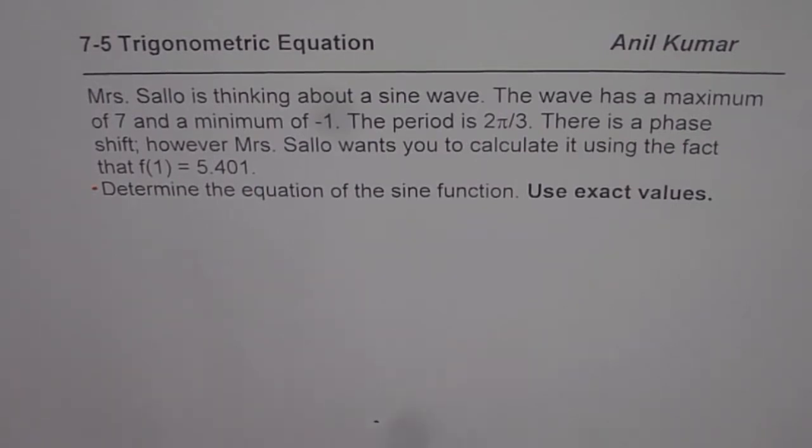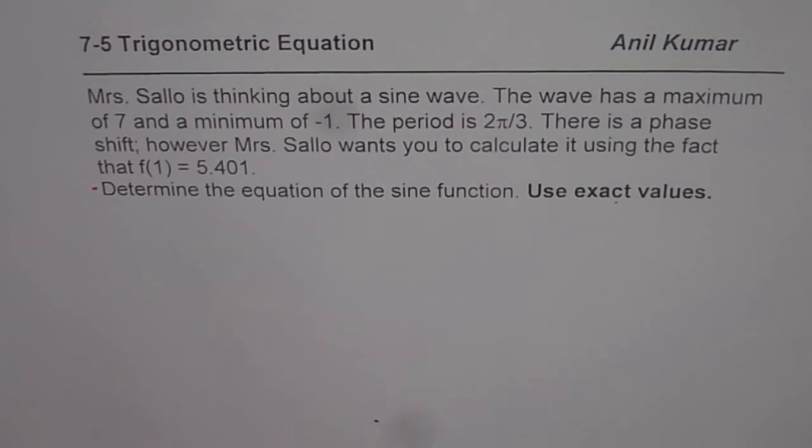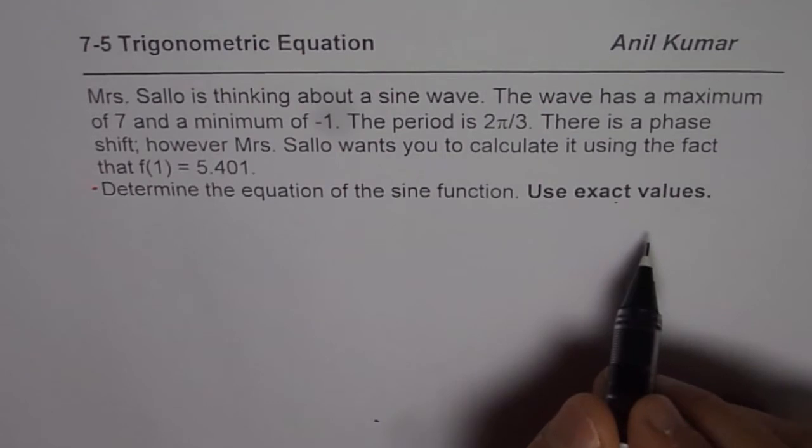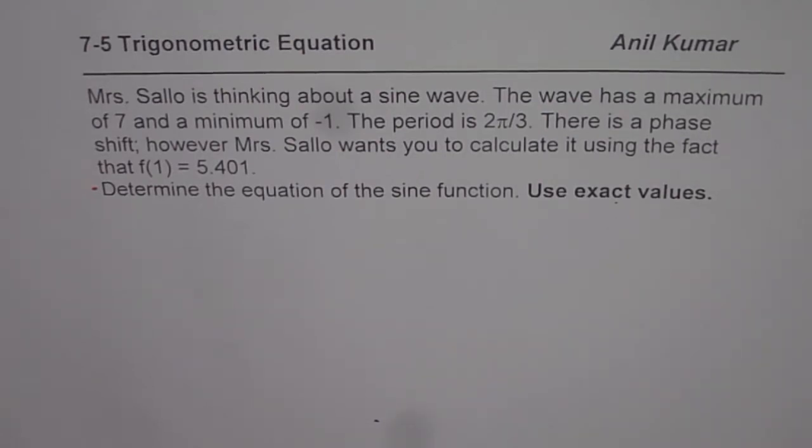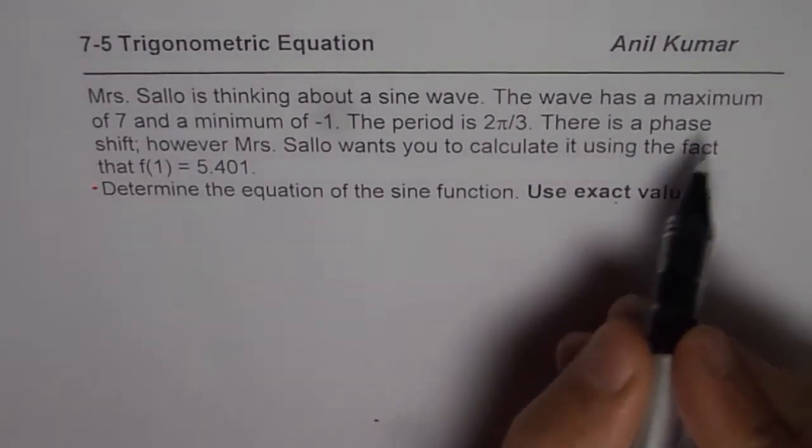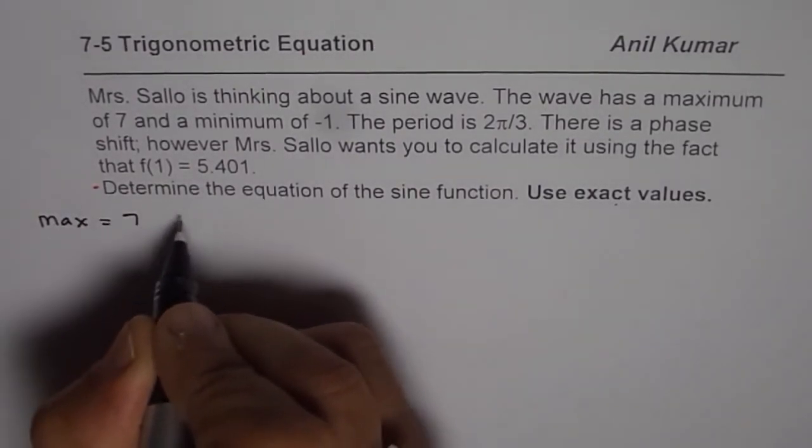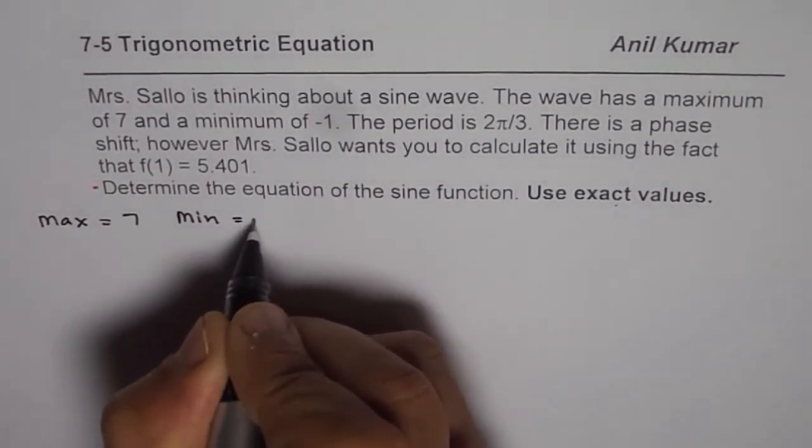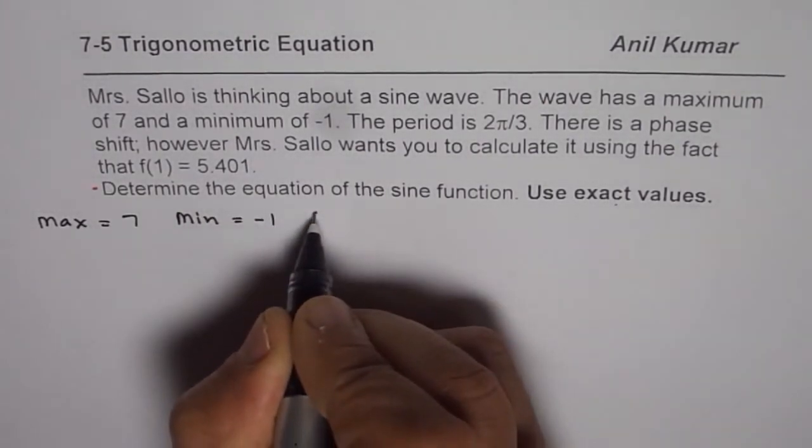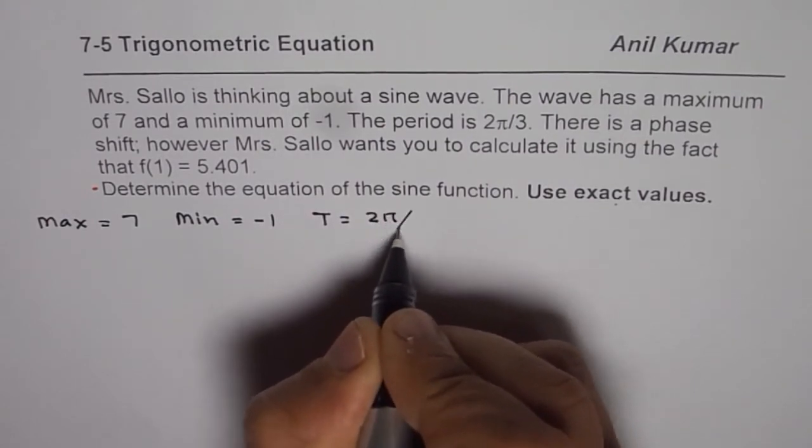In very few questions have I seen this part, use exact values. You can actually pause the question, solve this particular question, find the equation and the tricky part here is use exact values which I am going to share with you while finding the solution. Let us begin in the normal way: maximum equals 7, minimum is -1, and the time period T is 2π/3.